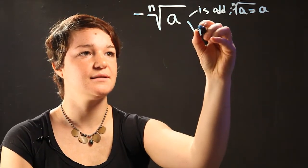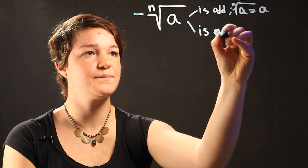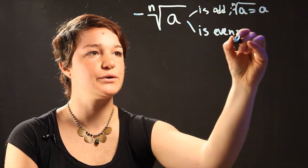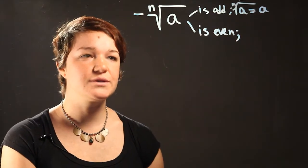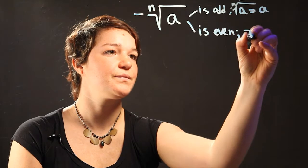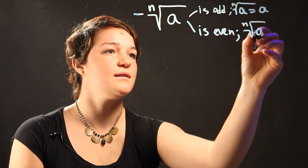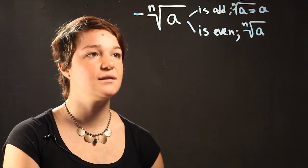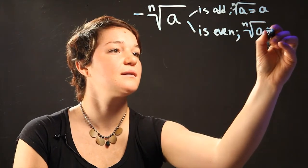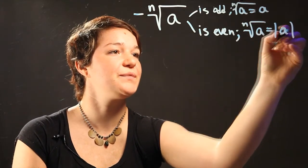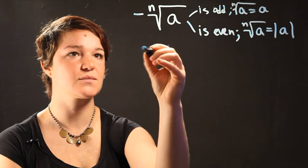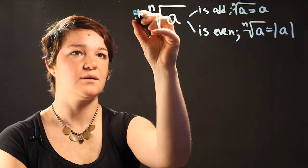On the other hand, if the index is even—so it's a square root, the fourth root, the sixth root—then the radical with an even index is going to be the absolute value of a. We'll make these stars.